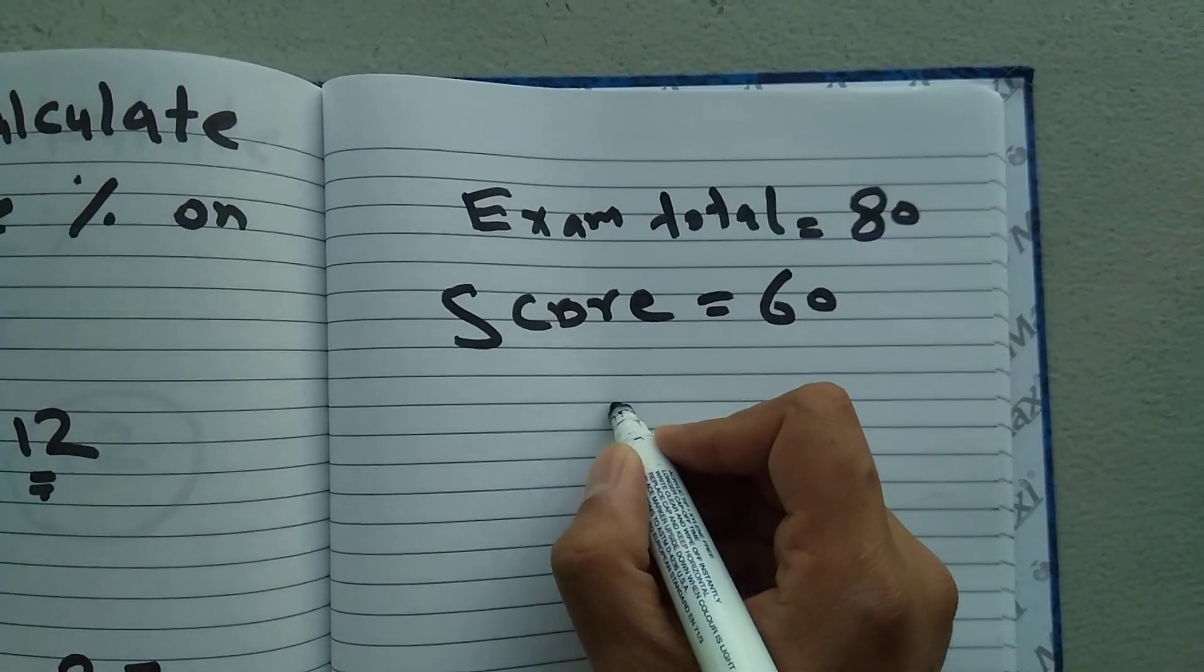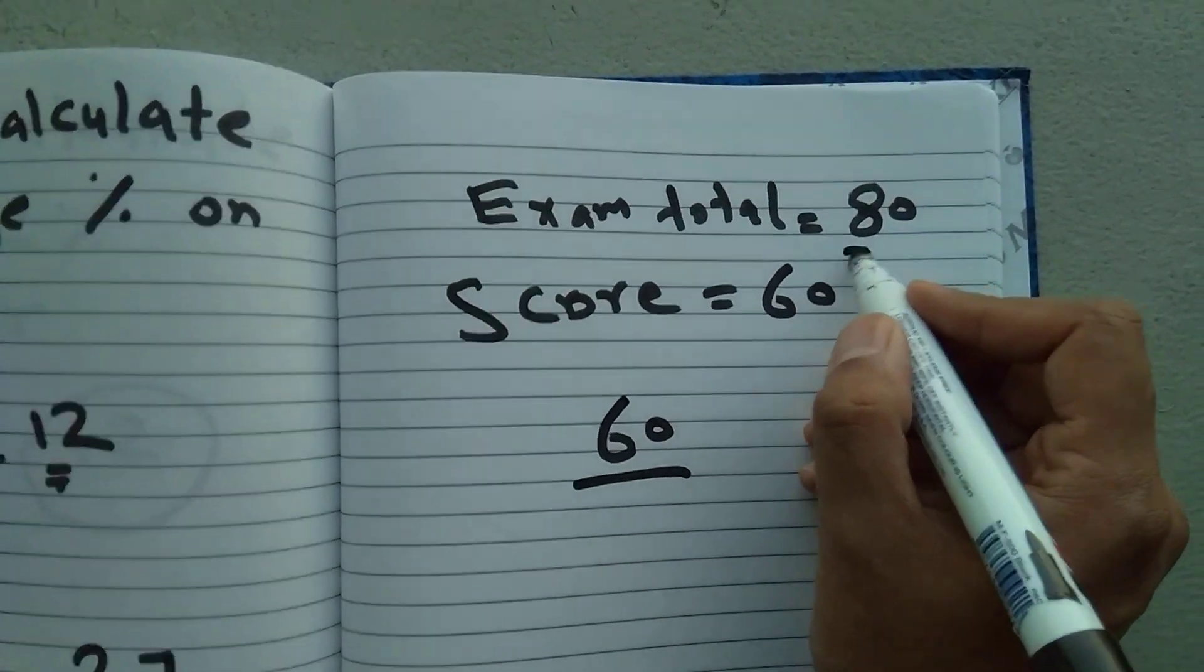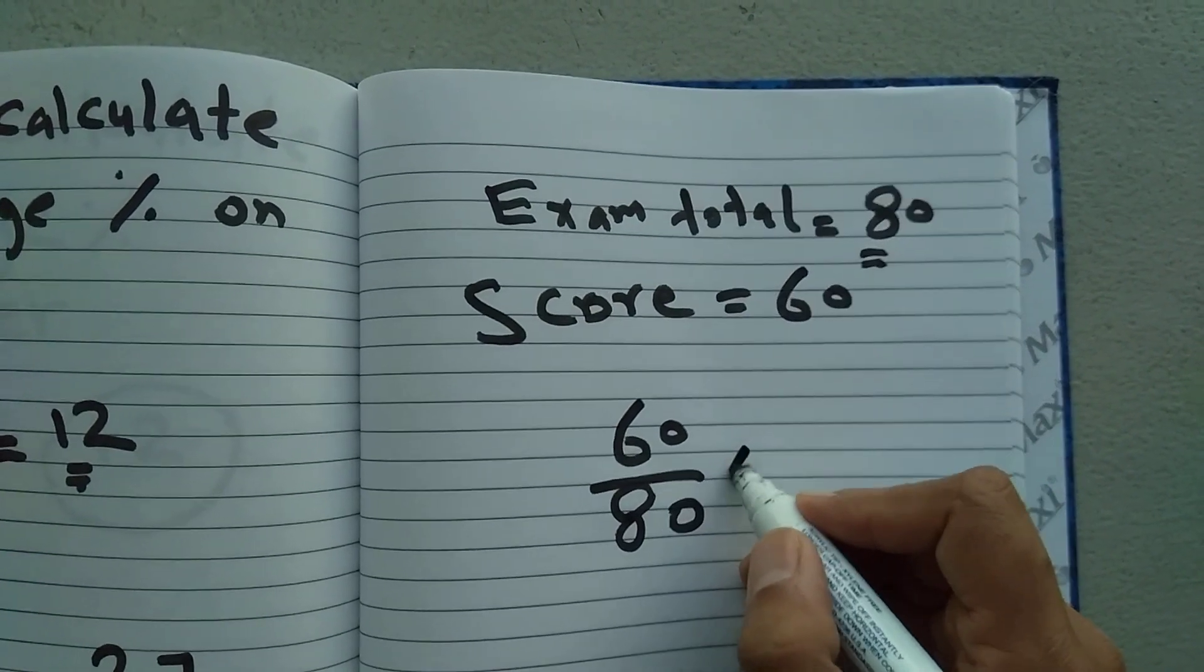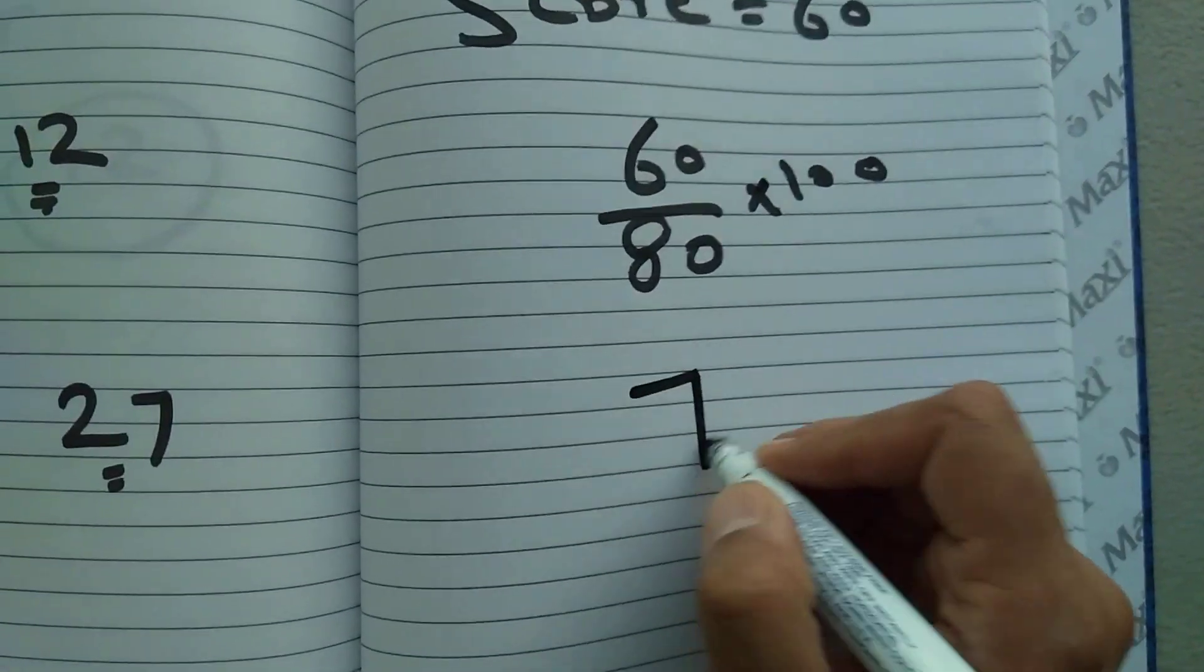It's very simple. You have to divide this 60 with the exam total. So you have to divide it with 80, and then you have to multiply it with 100.